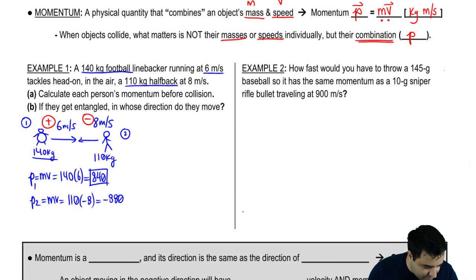Now the reason why I got a negative, it's because he's going to the left. We'll talk about this a little bit more later. Remember the units are kilograms, meters per second. Kilograms, meters per second. This is part A. I found both momentum. And then it says B, if they become entangled, in whose direction do they move?